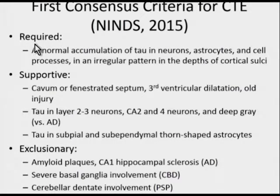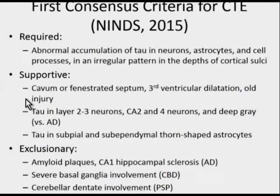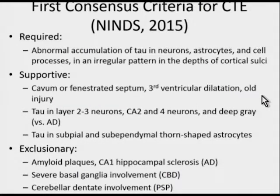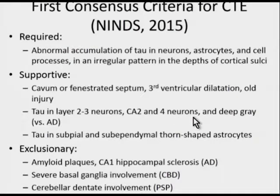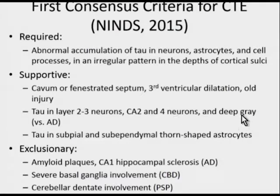The required criteria include abnormal accumulation of tau in neurons, astrocytes, and cell processes in an irregular pattern at the depths of cortical sulci. Supportive findings on macroscopic examination include a cavum septi pellucidi or fenestrated septum, third ventricular dilatation, or old injury such as old contusions. CTE characteristically shows tau in layer 2-3 neurons and in CA2 and CA4 neurons of the hippocampus and deep gray nuclei—in contrast to Alzheimer's disease, where tau accumulates in deeper layers, CA1, and the subiculum.